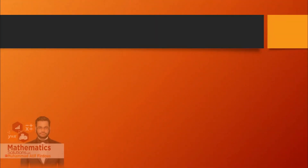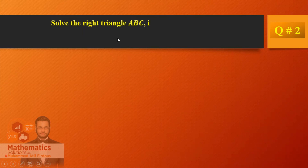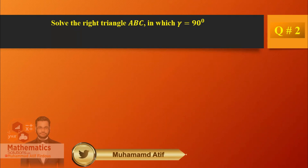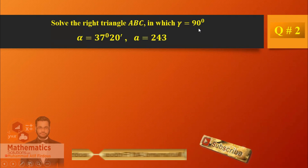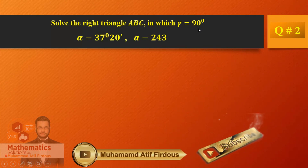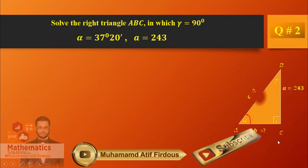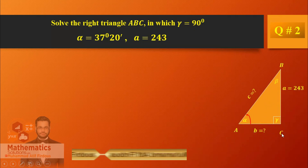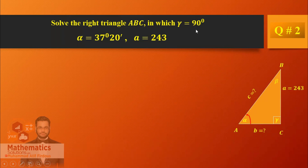Question number two: you have to solve the right angle triangle ABC in which gamma is equal to 90 degrees. Gamma must be 90 for the right angle triangle. So C is 90 degrees — I will make it easy. The corresponding angle for C is gamma, and gamma must be 90 because it has been mentioned.